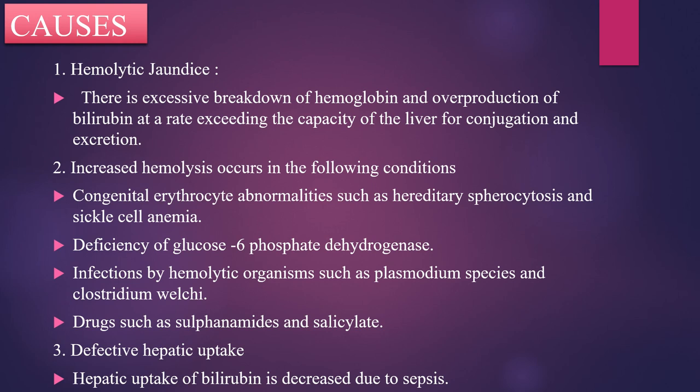The first important cause of retention jaundice is hemolytic jaundice. In this condition, there is an excessive breakdown of hemoglobin and overproduction of bilirubin at a rate exceeding the capacity of the liver for conjugation and excretion. Increased hemolysis occurs in conditions such as congenital erythrocyte abnormalities like hereditary spherocytosis and sickle cell anemia, and also deficiency of glucose-6-phosphate dehydrogenase activity.